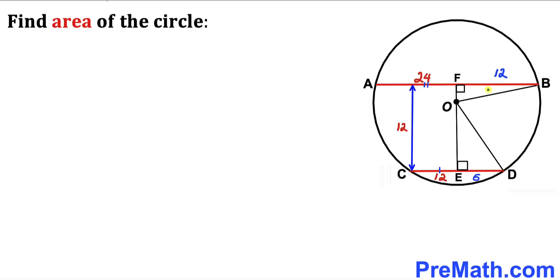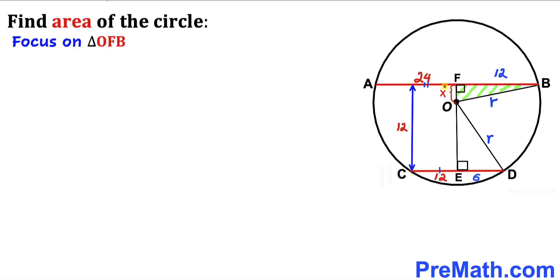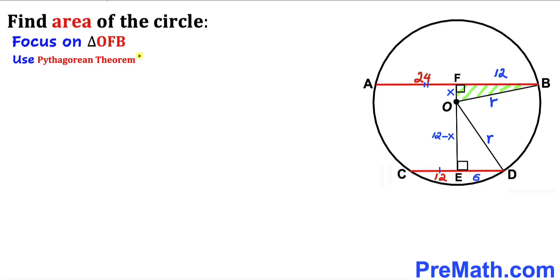I have connected this center O with point B and with point D, giving us two right triangles: triangle OFB and right triangle OED. We can see that OB is the radius of this circle — let me call this radius lowercase r — and likewise OD is the radius as well. Let's focus on right triangle OFB. Let's assume this side OF is x, and we know this whole side is 12, so segment OE turns out to be 12 minus x.